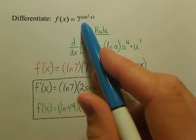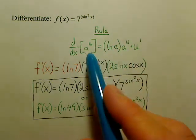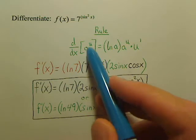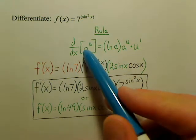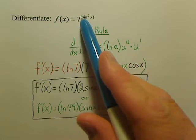When you take the derivative of an exponential function where the base is not e, this is the formula you use. We're going to say a is the base, so in this situation a is 7, and u is the power. In this situation it's sin²x.